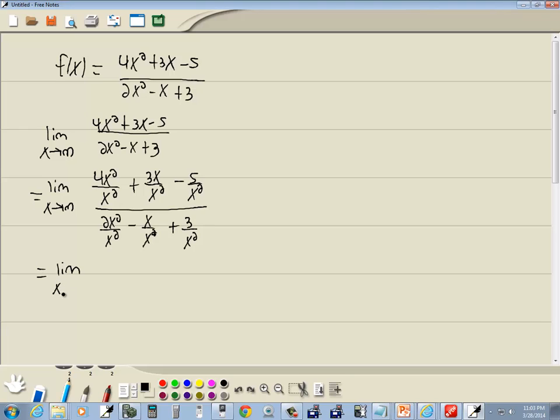So we've got limit as x goes to infinity. These x squareds cancel, so we've got 4 plus 3 over x minus 5 over x squared all over 2 plus 1 over x plus 3 over x squared.